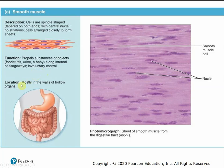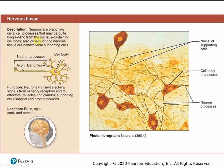Nervous tissue is composed of neurons and neuroglial cells, which are supporting cells of the neurons. Neurons are excitable cells that transmit electrical signals from sensory receptors to the brain and to muscles or glands. Nervous tissue is found in the brain, spinal cord, and nerves.